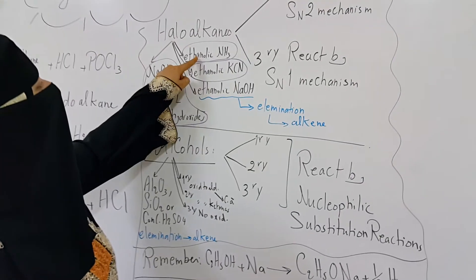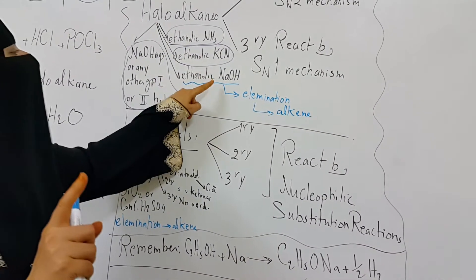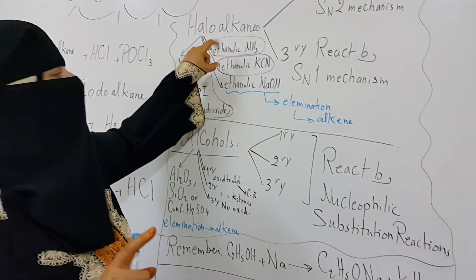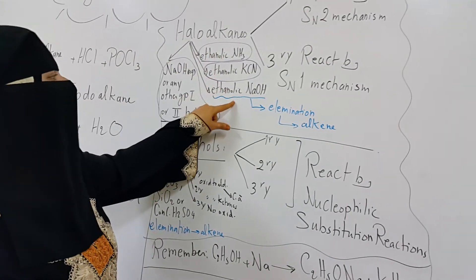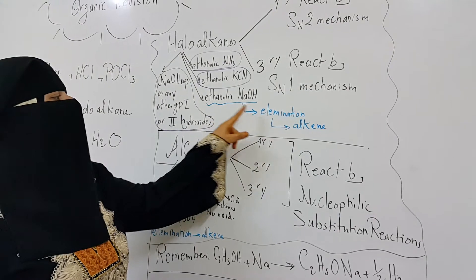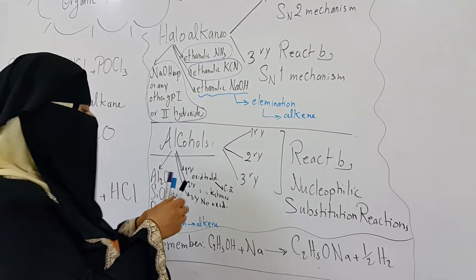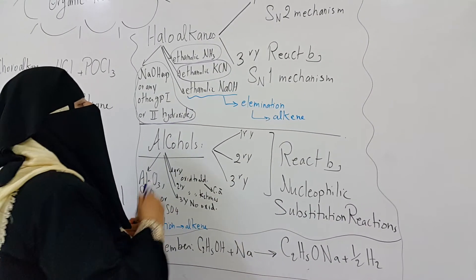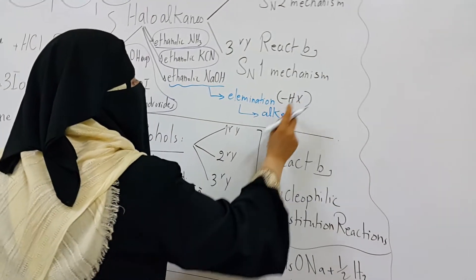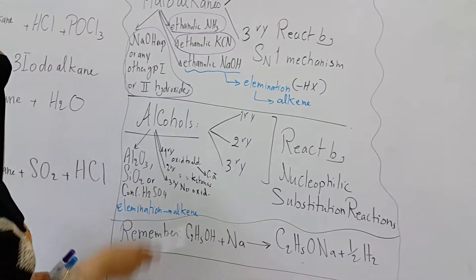Halo-alkanes react with ethanolic ammonia and ethanolic potassium cyanide by nucleophilic substitution reaction. The reaction with ethanolic sodium hydroxide is called elimination, and an HX molecule is eliminated to produce the corresponding alkene from the halo-alkane.